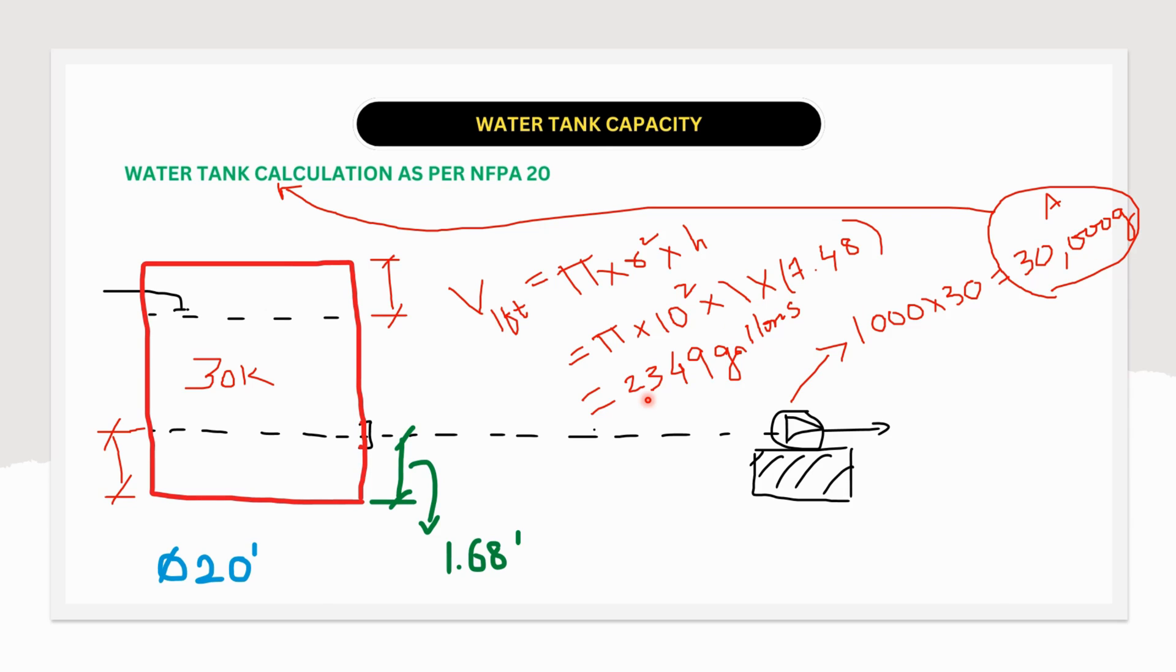Then only we can decide the water tank size. So now again by using the same formula, volume is equal to π × r² × h. So π multiplied by 10 square multiplied by 1.68 feet. This time it would be 1.68 feet. This might vary based on the suction line center. Now the value will be 3,948 gallons.